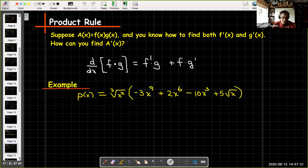Let's look at an example. Here I have a function p(x) which equals the cube root of x² times, in parentheses, -3x⁹ + 2x⁶ - 10x³ + 5√x.